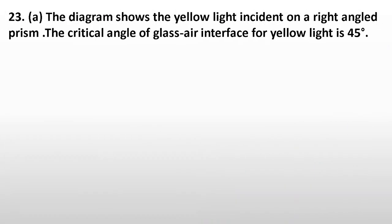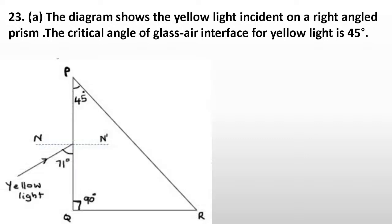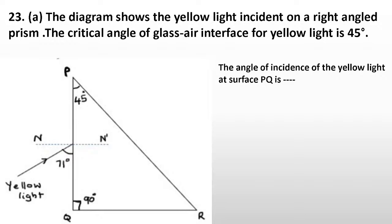Question number twenty-three A. The diagram shows yellow light incident on a right-angled prism. The critical angle of the glass-air interface for yellow light is 45 degrees. The angle of incidence of the yellow light at surface PQ is dash. Options: A, 119 degrees; B, 71 degrees; C, 90 degrees; D, 19 degrees.